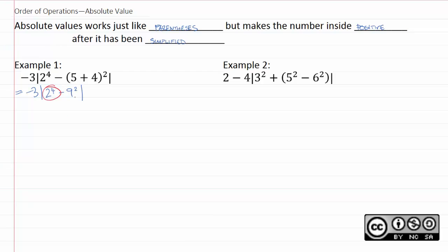Next, we have two exponential expressions here and here. We're just going to take both numbers to their powers, and so we'll have −3 times the absolute value of 16 minus 81.